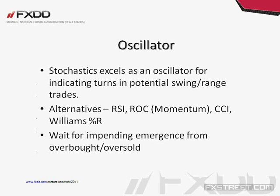Another way oscillators can be used as a confirmation: a cross above oversold or a cross below overbought confirms a turn in a range trading situation. I use stochastics; alternatives include RSI, Rate of Change (ROC), CCI, or Williams %R. What I'm looking for is an impending emergence from overbought or oversold territory. When the oscillator is in the middle between overbought and oversold, it doesn't mean anything to me unless I'm looking for divergences.